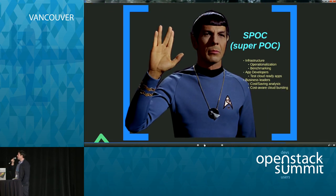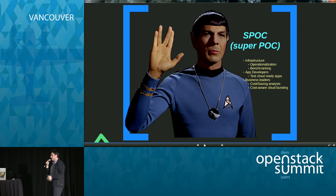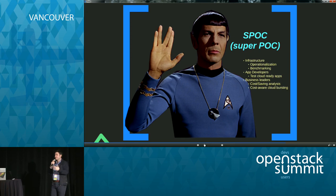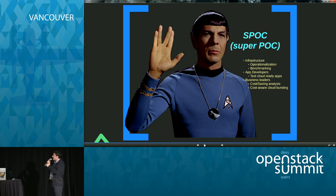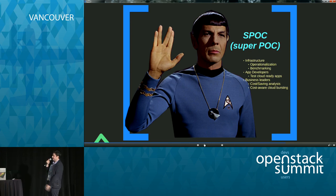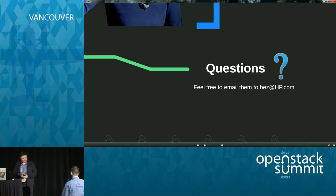If you have dispersed multi-directional POCs within an organization, you cannot truly measure perceived usefulness and perceived ease of use — because you're measuring only one part of the organization. That's why I introduce SPOC — a super POC. It's not a normal POC: it goes beyond just your DevOps standing up 16 nodes of OpenStack. It involves your developers building a cloud-ready application and testing it on your OpenStack environment. It involves your business leaders doing cost analysis and analyzing burst into cloud compared to traditional systems. That's my call to action and my presentation. I hope you enjoyed it.